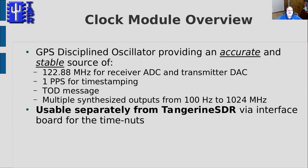We generate a number of frequencies — both RF for the receiver and transmitter and a pulse per second used for time stamping. We also wanted to make sure that this system could be used separately from the Tangerine SDR, because we think that the time nuts community may be interested in a number of its capabilities.